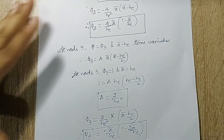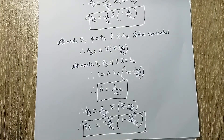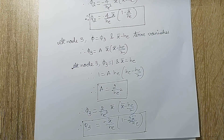This is how we calculate shape functions for linear and quadratic elements. You can also calculate for a cubic element, which is n = 4, meaning four nodes dividing the element into four parts. I hope you have understood the derivation. If you have any doubts, please write in the comment section. See you in the next session, thank you.